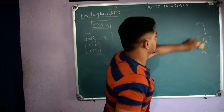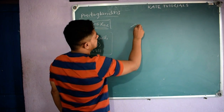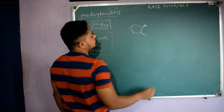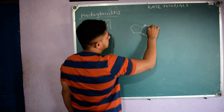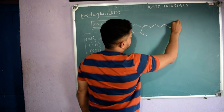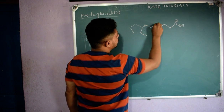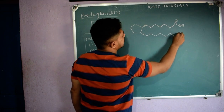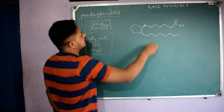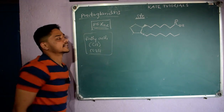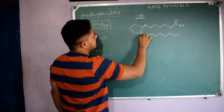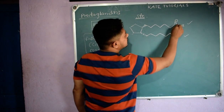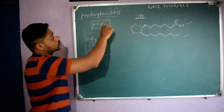Let me give you the structure of prostaglandins. The structure contains a cyclopentane ring with two side chains. Numbering the carbons: 1 through 9 on one side and 10 through 20 on the other, giving 20 total carbons. The acid group is at C1, which is why we call it a fatty acid — because in biosynthesis, prostaglandins are derived from fatty acids.